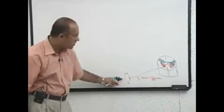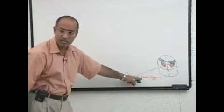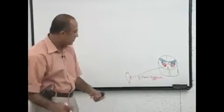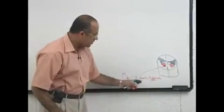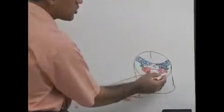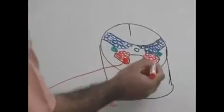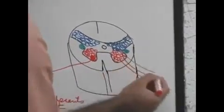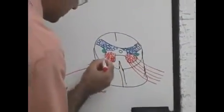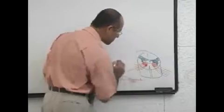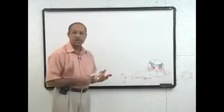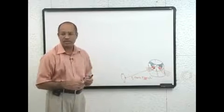Somatic means under your willful control. So from the neurons in the anterior gray horn, the fibers going out are General Somatic Efferents.